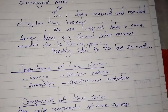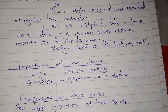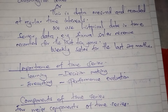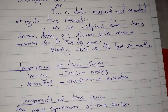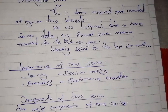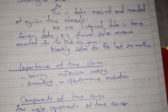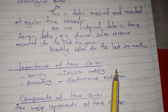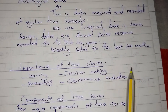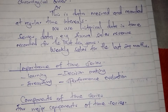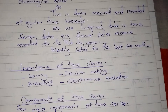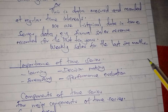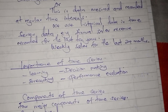Third, decision making: for example, weekly sales for the last 24 months can help you determine the sales of the next month, or how to increase sales in case they have declined. Fourth, performance evaluation: data about weekly sales for the last 24 months will help you determine whether the performance of the organization or business has improved or declined.